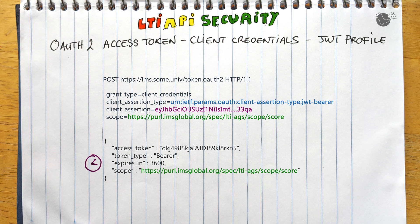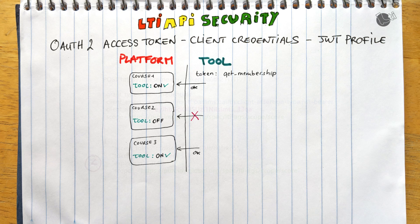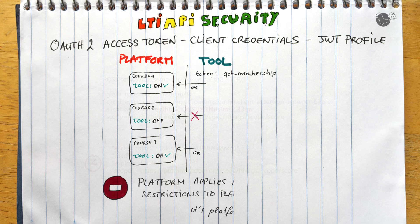Since this is a client credentials grant, you can use this token to perform the operations granted by the scopes across the full platform. For example, if you were granted the scope to get a course roster, you could theoretically use that token to request the roster of any course. Because that seems overly permissive, platforms will typically enforce additional contextual restrictions — for example, preventing a tool from requesting the roster of a course where the tool is not actually used.